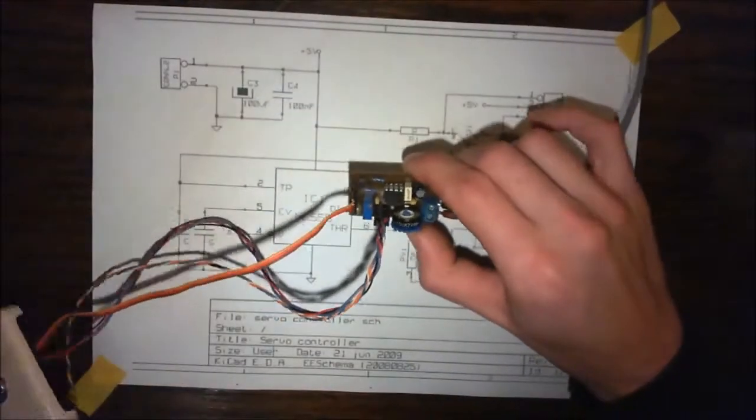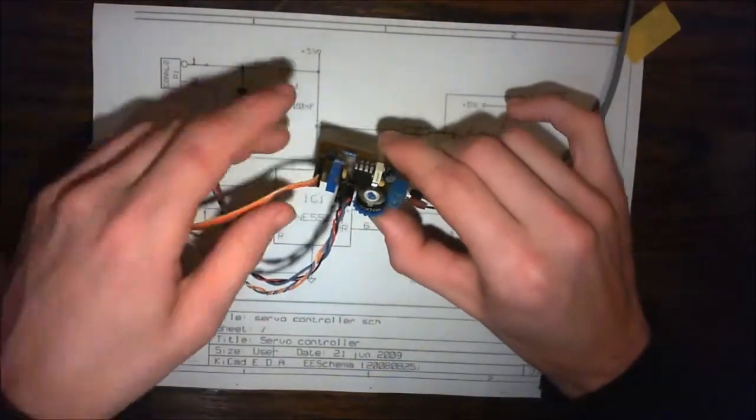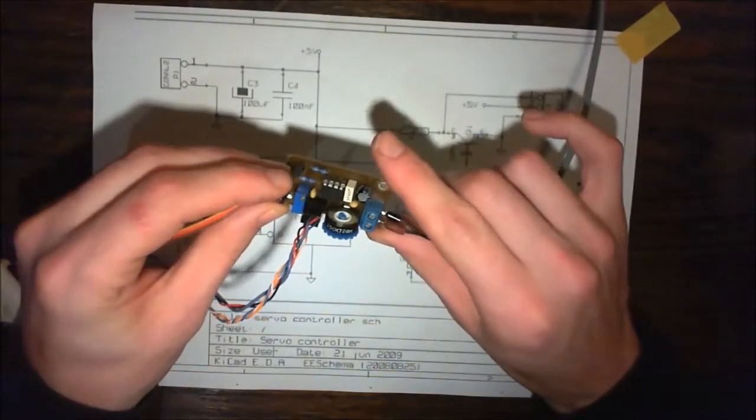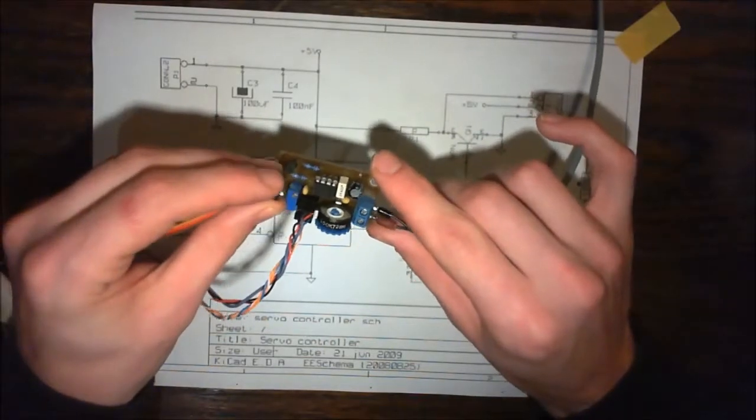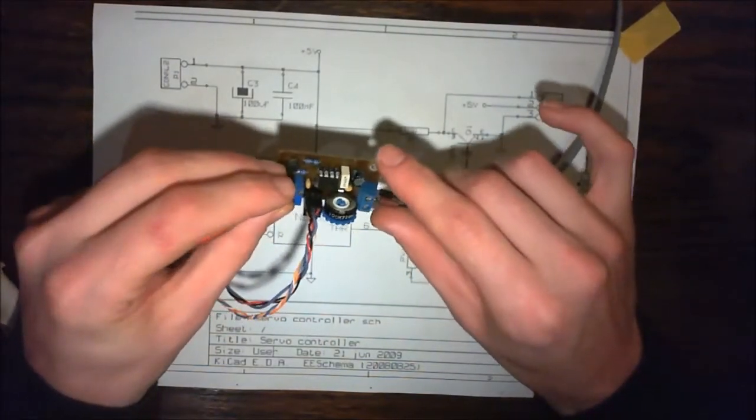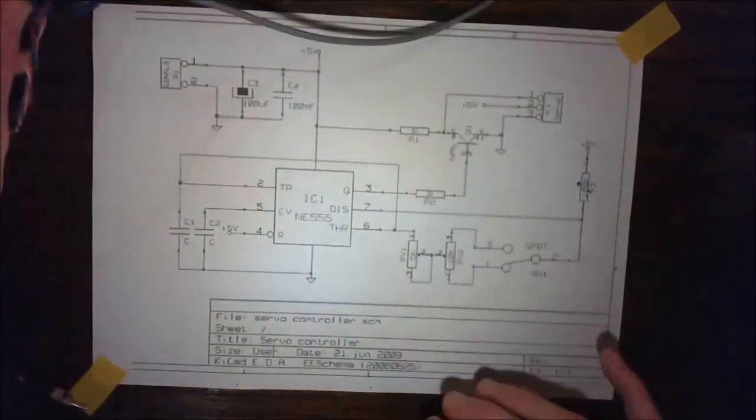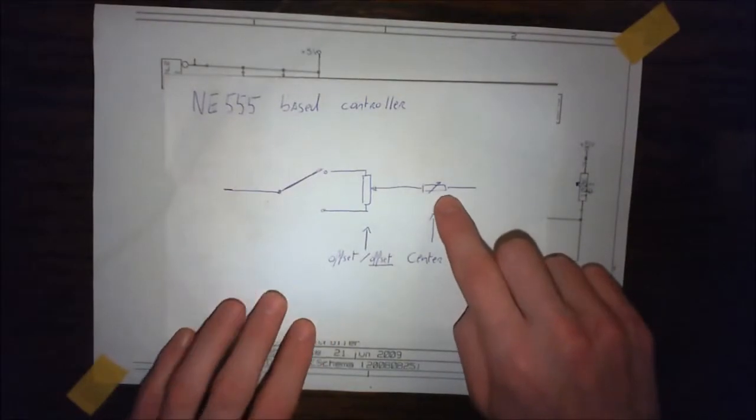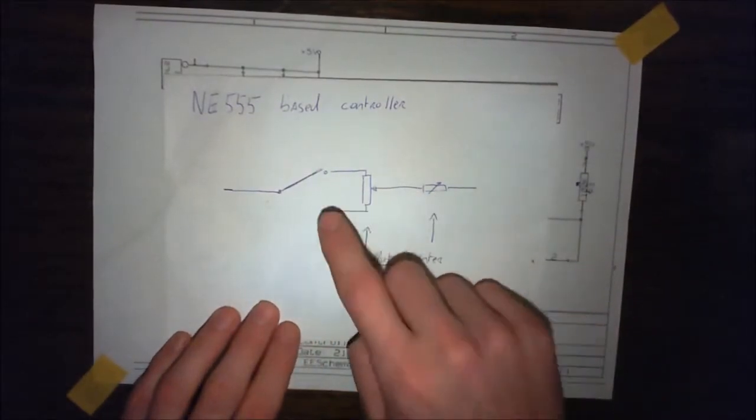In an earlier video I did, I blinked the LED using servos. The servos were controlled by this controller. It's based on an NE555 timer and it's very simple. The controlling part is a variable resistor, a potentiometer, and a switch.